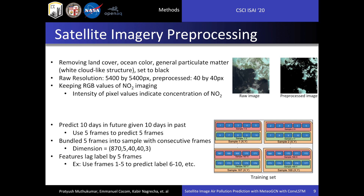The goal in satellite image preprocessing was to isolate the nitrogen dioxide imagery in the raw data. We removed the land cover, ocean color, and general particulate matter — the white cloud-like structure — setting those pixels to black (0-0-0 in RGB). The raw resolution was 5,400 by 5,400 pixels, but due to the amount of data and model complexity, we downsampled our images to 40 by 40 pixels. We left the RGB values of the light blue NO2 structures as-is, since pixel intensity directly corresponds to the intensity of NO2 at that location, allowing easy translation from pixel value to raw value. The raw image is on the left and the preprocessed image is on the right in the upper figure.